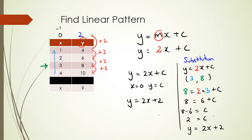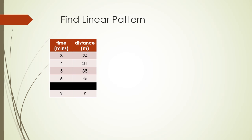Now I'll show you one more example. In this one, the table starts from x = 3 rather than x = 1. Also, you won't always have just x and y — sometimes you need to use different letters. The table here has 'time in minutes' and 'distance in meters,' so the equation will still have the format y = mx + c, but with different variable names.